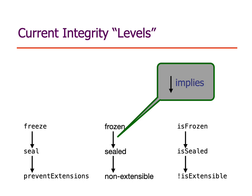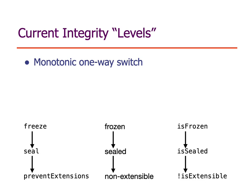On the left we have the verbs — the methods that bring about these integrity levels. In the middle we have the states, which is what I'll be sticking with for the rest of the presentation. And on the right we have the predicates for testing. What I take to be defining of an integrity level — which I'm going to carry forward as the attributes of all of the proposed new integrity traits — is that each one is a monotonic one-way switch.